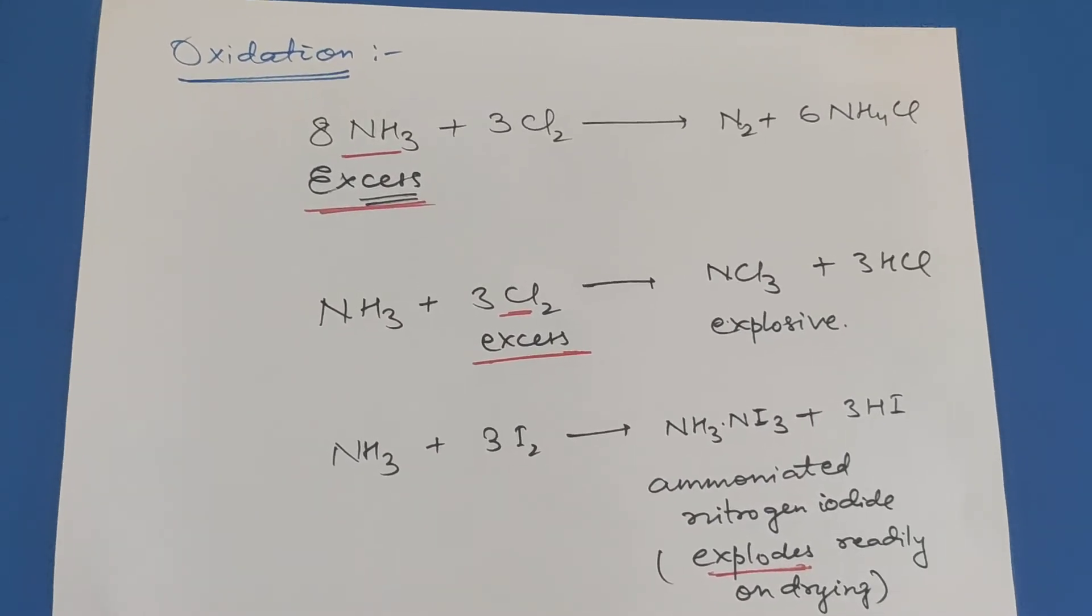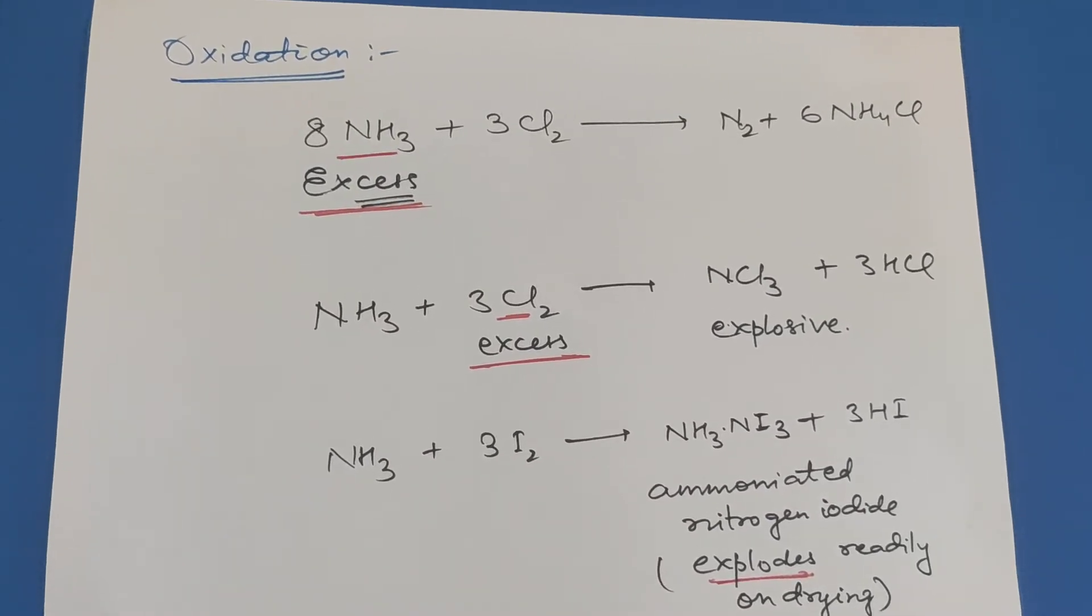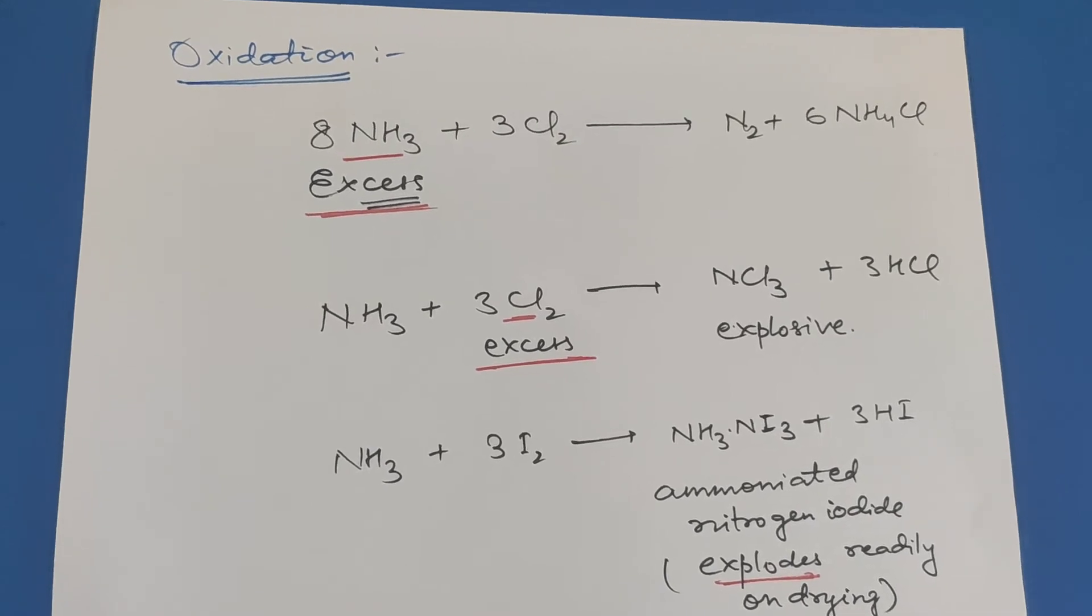Oxidation: Ammonia treated with chlorine forms nitrogen plus ammonium chloride when ammonia is in excess.